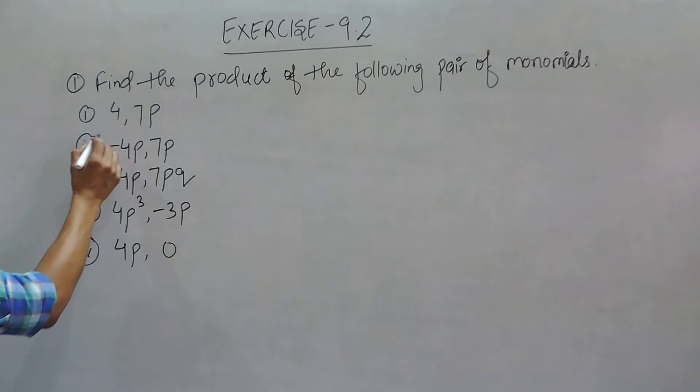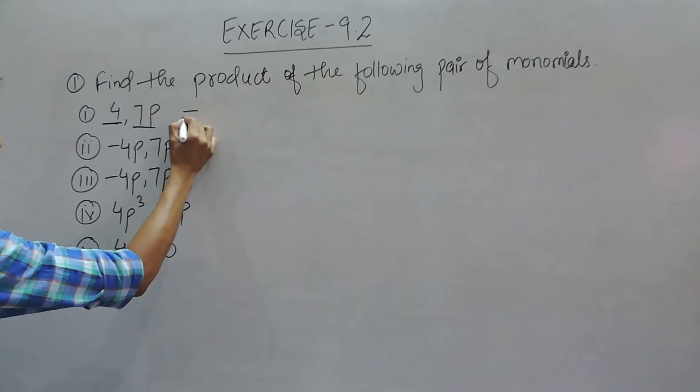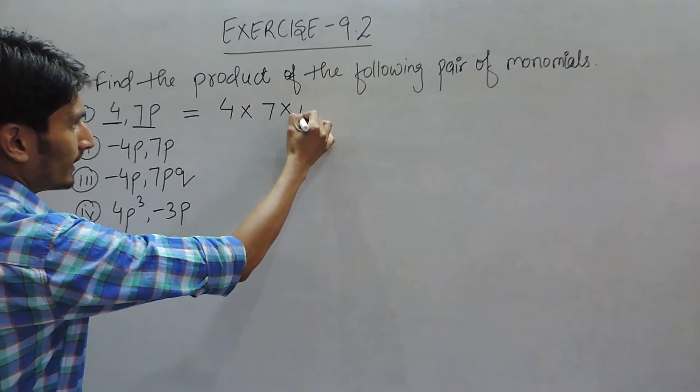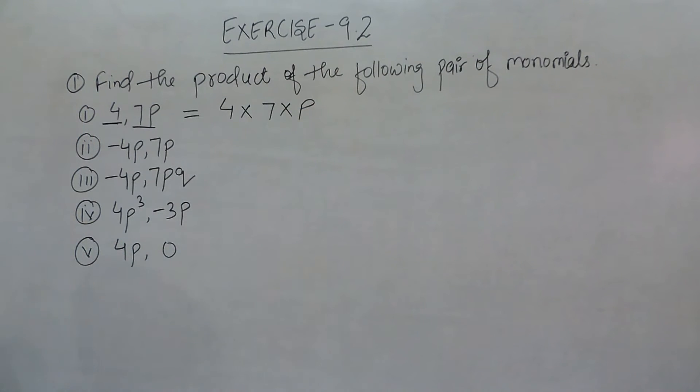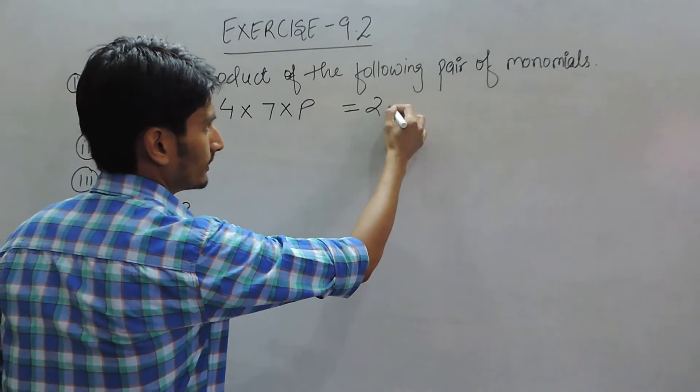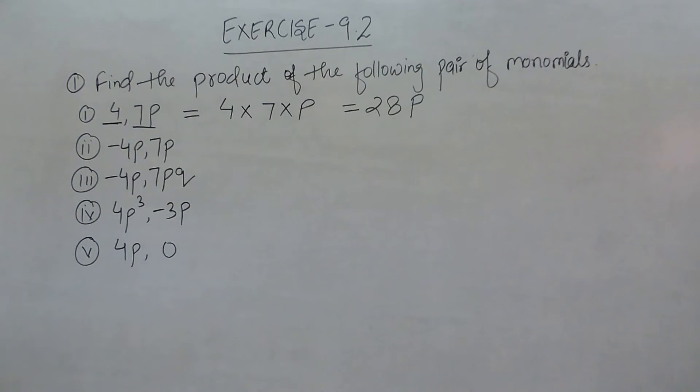This means we have to multiply this monomial with this monomial. So 4 is multiplied by 7, multiplied by P. One thing is important: all the constant values can be multiplied. So 7 into 4 is 28, and it is multiplied by P, so it will give 28P.